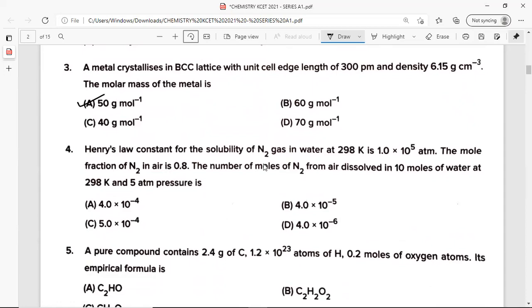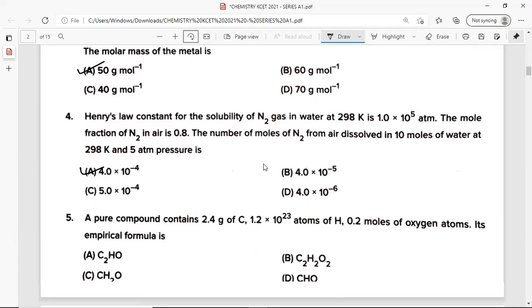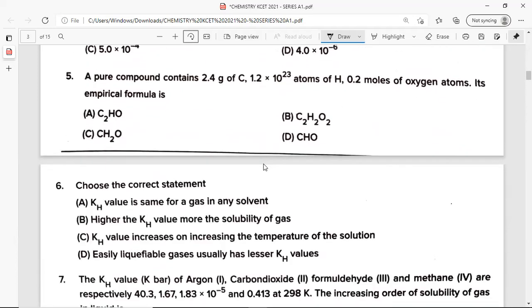Question number 4: Henry's law constant for the solubility of N2 gas in water at 298 Kelvin is 1 into 10 power 5 atmosphere. The mole fraction of N2 in air is 0.8. The number of moles of N2 from air dissolved in 10 moles of water at 298 Kelvin and 5 atmosphere pressure is option A, 4 into 10 power minus 4 mole. Question number 5: A pure compound contains 2.4 gram of carbon, 1.2 into 10 power 23 atoms of hydrogen and 0.2 moles of oxygen atoms. Its empirical formula is option B, CHO.